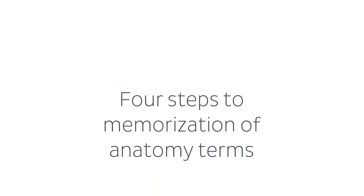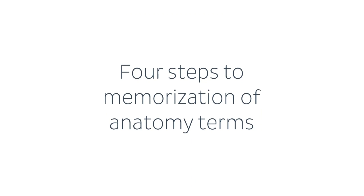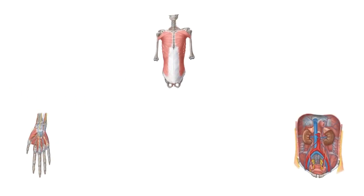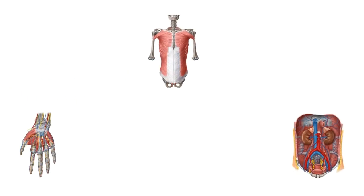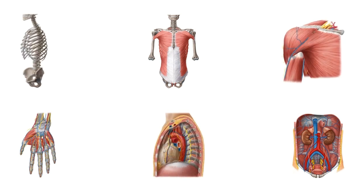There are around 8,000 anatomical terms to learn in order to understand the macroscopic and microscopic structures of the human body. Taken as a whole, memorisation seems like an impossible task. Breaking it down into portions makes it much more manageable. Don't underestimate what you already know — you're probably farther along than you think.